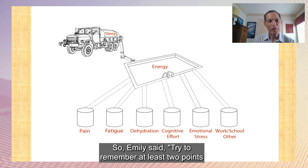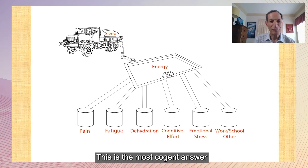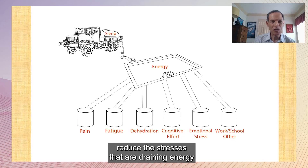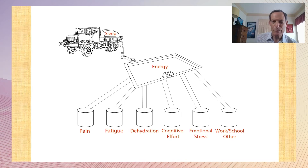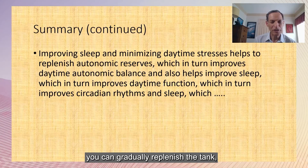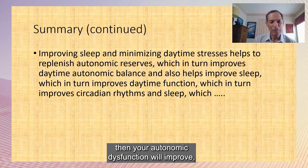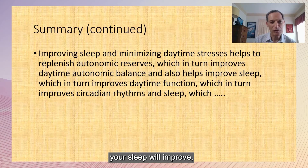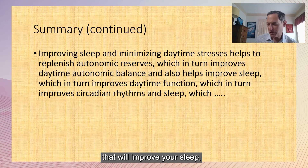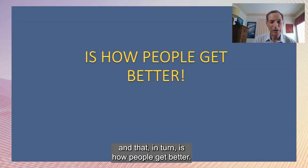The most cogent answer to 'what do I have to do to get better?' is: make your sleep better and reduce the stresses draining energy from your system. If you can reduce pain and minimize other stresses, you can gradually replenish your reserves. Then your autonomic dysfunction will improve, sleep will improve, you'll feel better, you'll be able to do more during the day, which will improve your circadian rhythms — and that is how people get better.